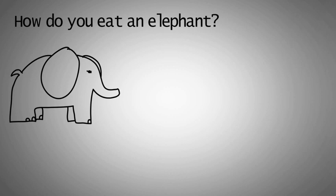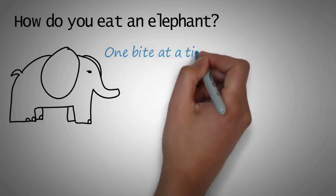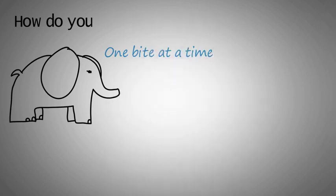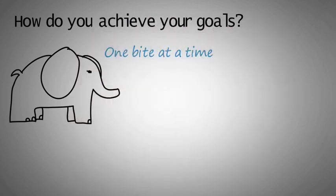Have you heard the old question? How do you eat an elephant? The answer? One bite at a time. How do you achieve your goals? The same way. You break them down into specific step-by-step activities and then you start on the first one.